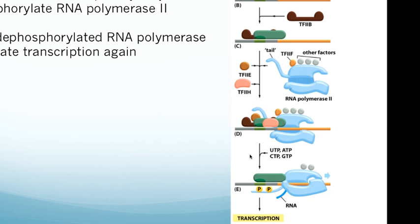To terminate transcription, RNA polymerase hits a terminator site and also becomes dephosphorylated — the phosphates are removed by a phosphatase. That turns off RNA polymerase 2 from transcribing, and RNA polymerase 2 falls off of the DNA strand. It can then be recycled and used to transcribe again.